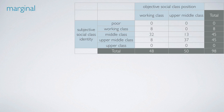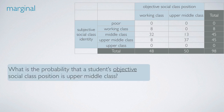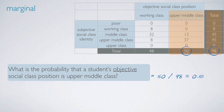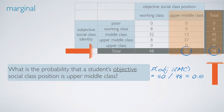Let's start with marginal probabilities. What is the probability that a student's objective social class position is upper middle class? We look at the objective upper middle class column and see that there are 50 students in this category out of a total of 98 students, so the probability is 50 over 98, roughly 51%. The term marginal probability comes from the fact that the counts we use came from the margins of the contingency table.